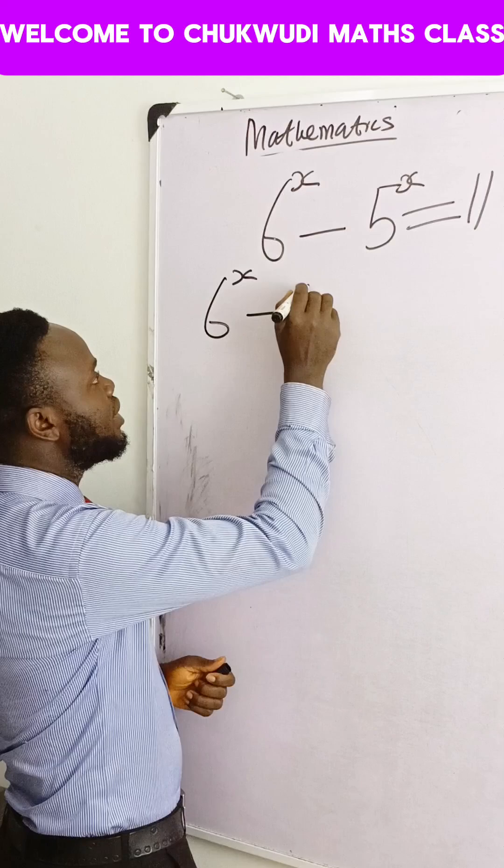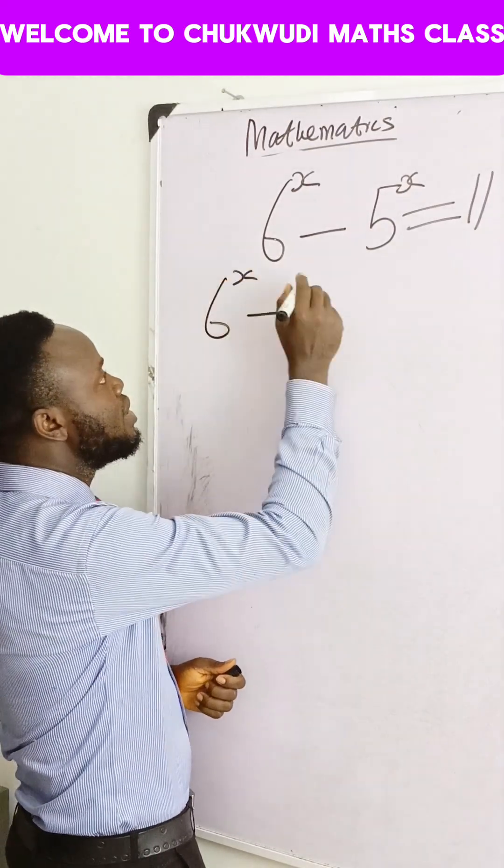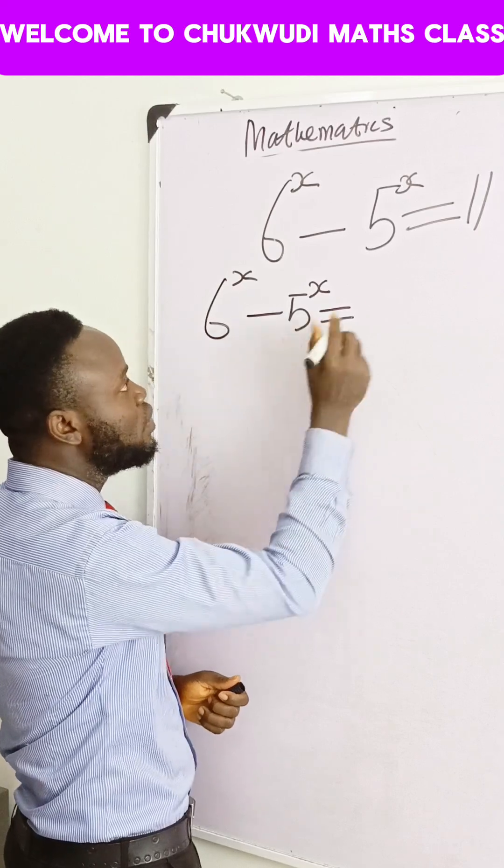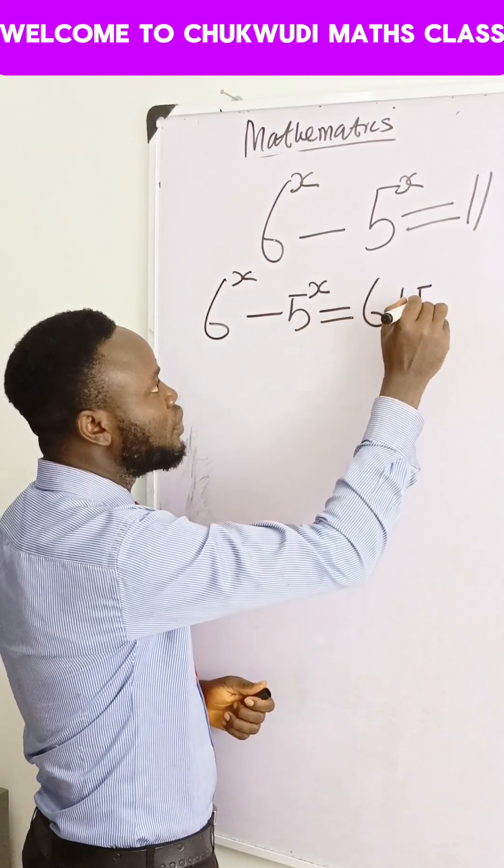6 to the power x minus 5 to the power x is equal - so we know that 11, considering this and this, will give you 6 plus 5.